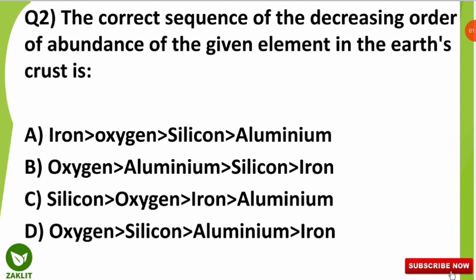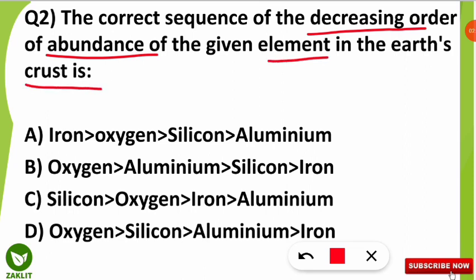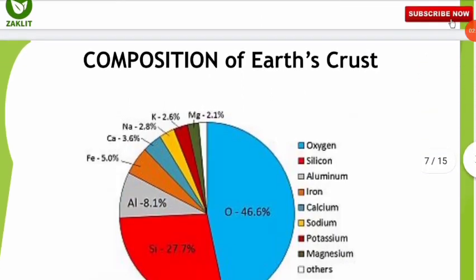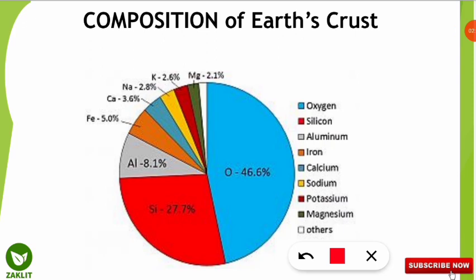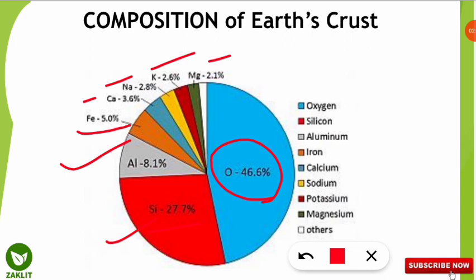The next question — one of the frequently asked questions in environmental science entrances — was: what is the correct sequence of decreasing order of abundance of elements in the Earth's crust? The correct option is option D: oxygen, followed by silicon, aluminum, and iron. Oxygen has the maximum share at 46.6%, followed by silicon at 27.7%, aluminum at 8.1%, and iron at 5%, then calcium, sodium, potassium, and magnesium. This pie chart is very important — kindly note it down.